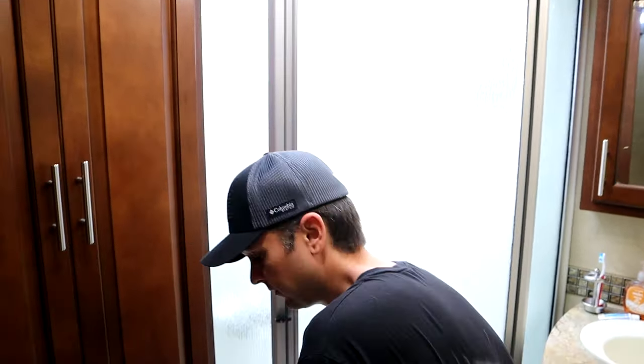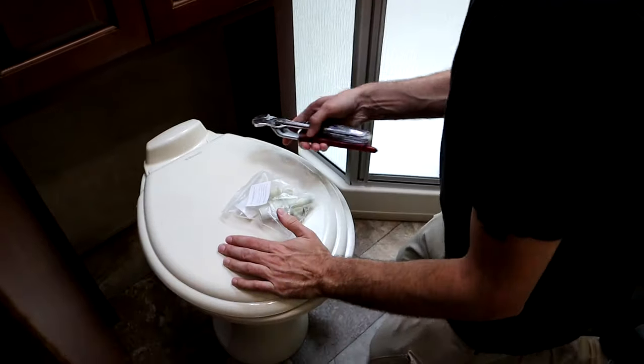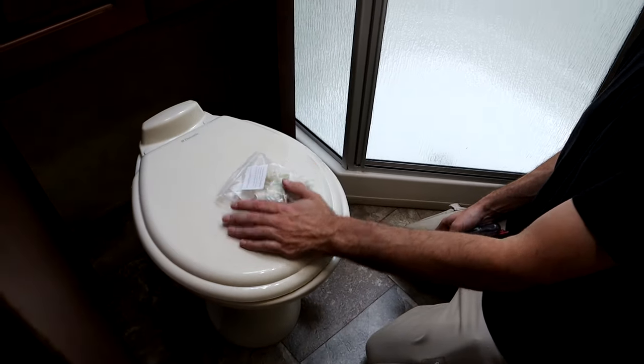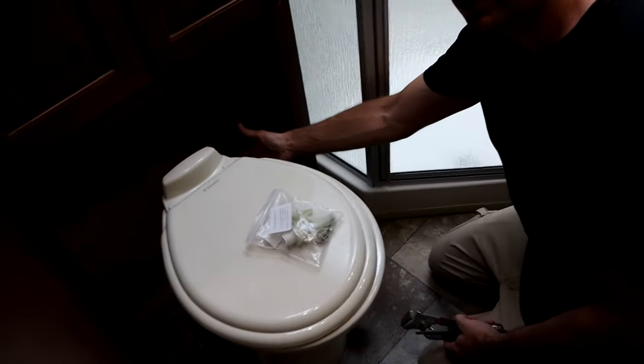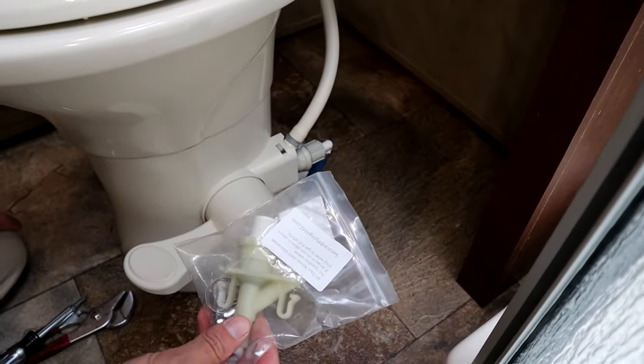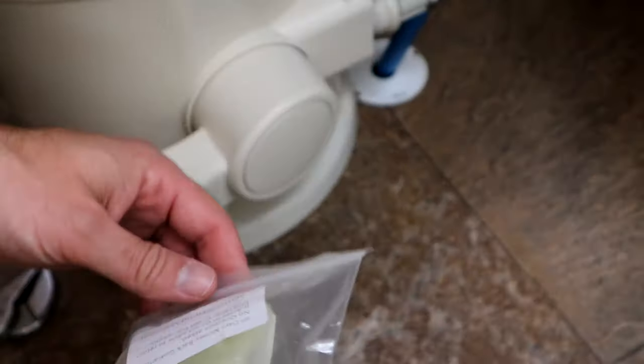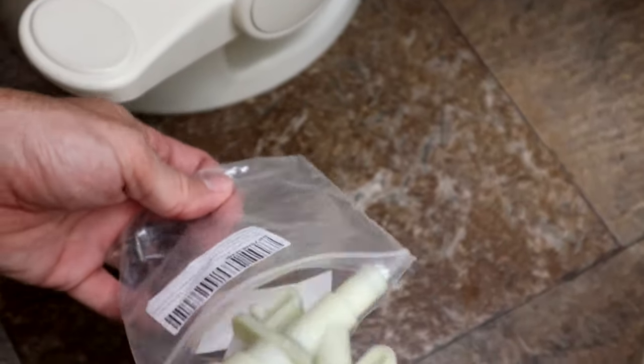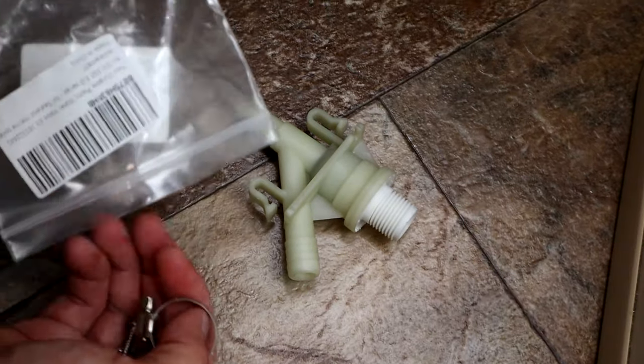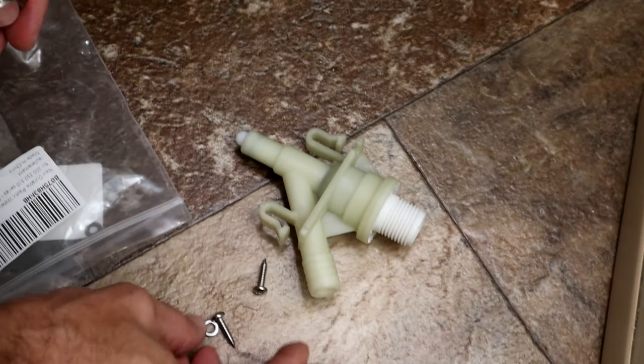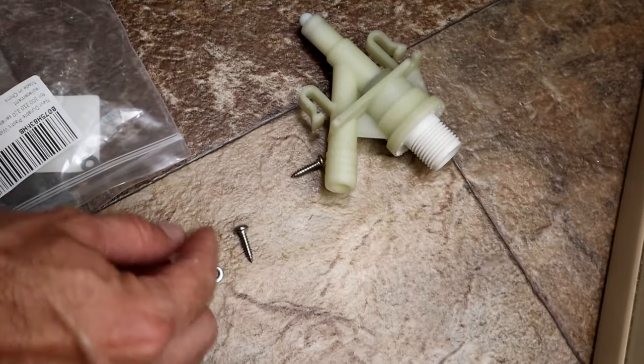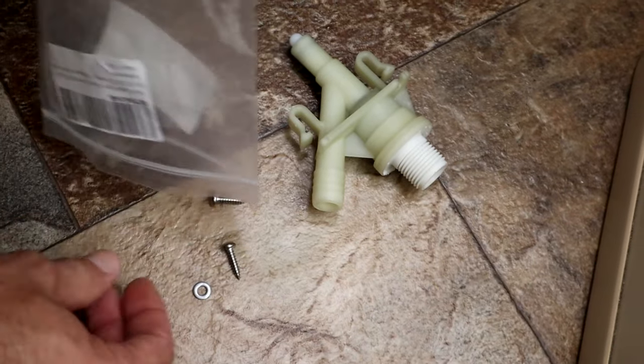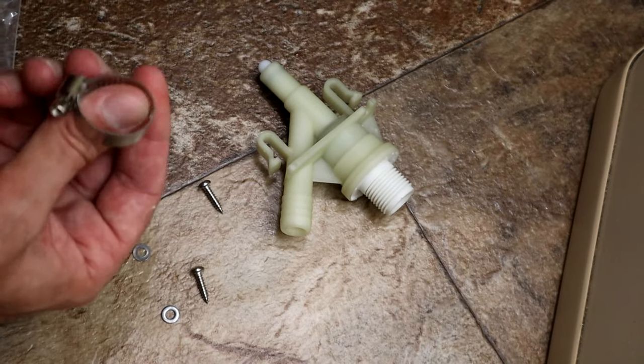Alright, fortunately versus our other video, we do not have to take the toilet out in this case because I have plenty of room to work behind it. The first step, I would check that you have all your parts. And this comes with the valve itself, it comes with two screws, and two washers, and a new pipe clamp.